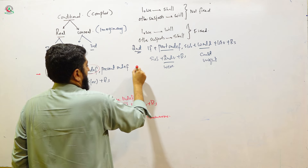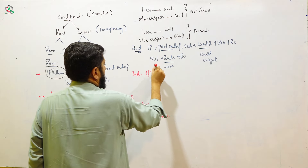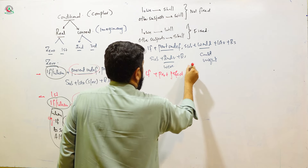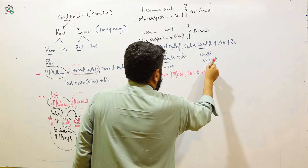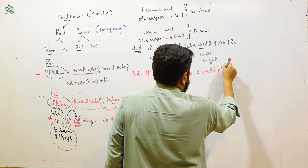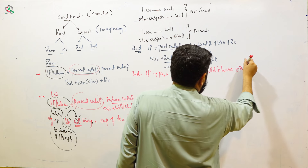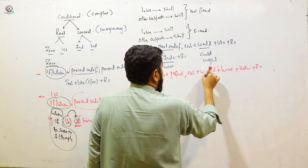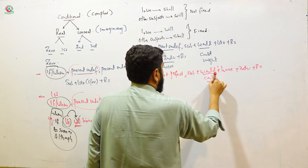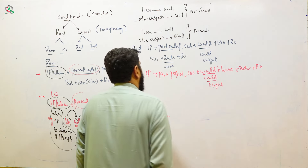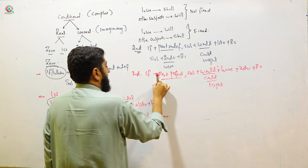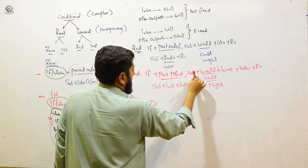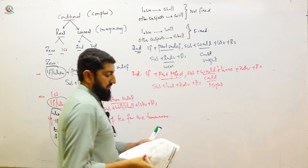Next is the third conditional. Third conditional: if + past perfect, subject + would + have + third verb + rest of the sentence. In place of 'would,' you can use 'could' or 'might.' Past perfect is: subject + had + third verb + rest of the sentence.